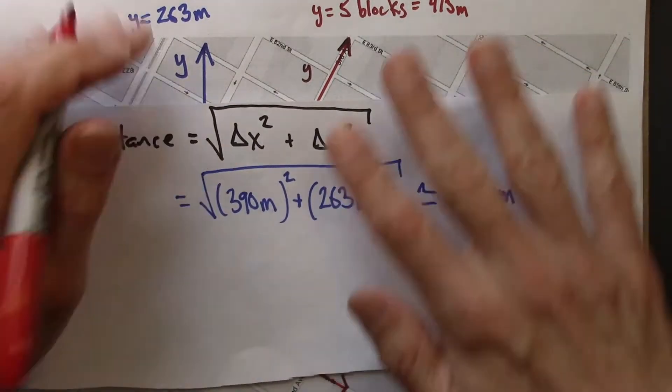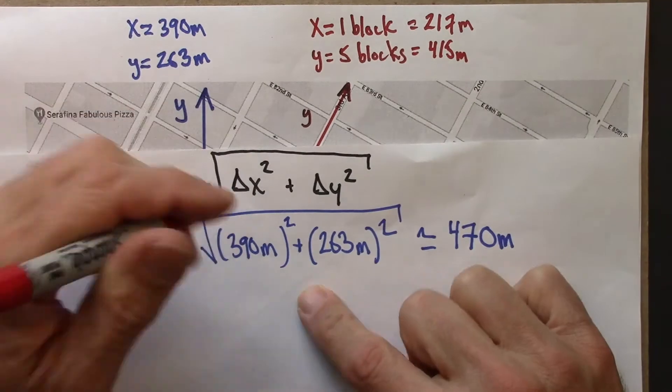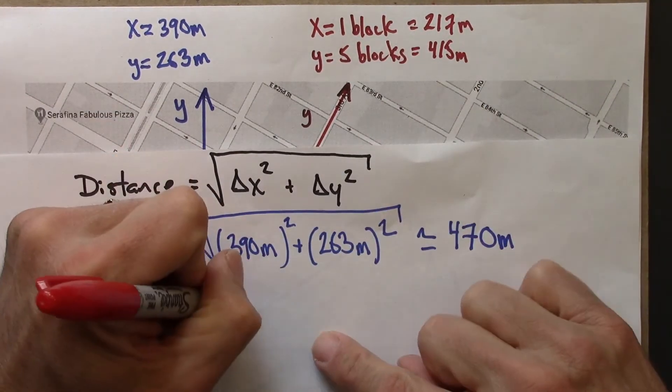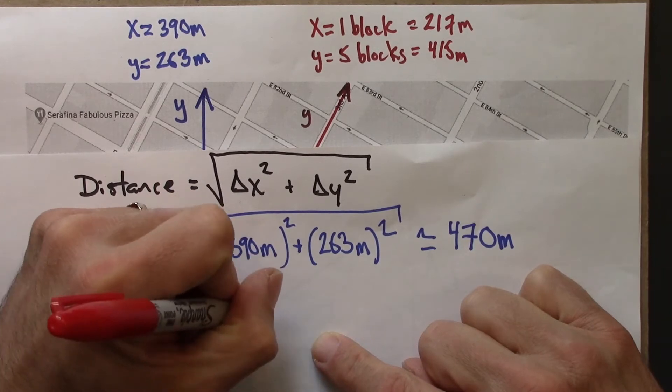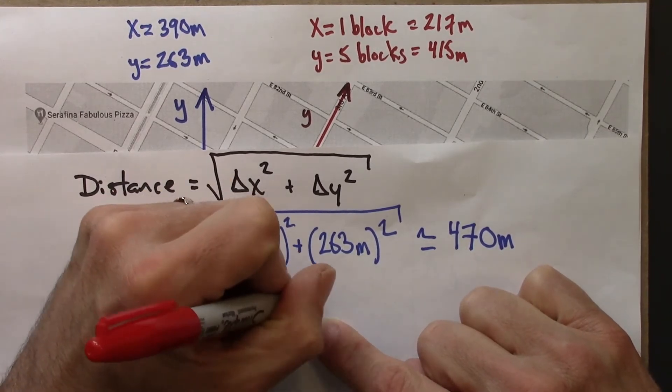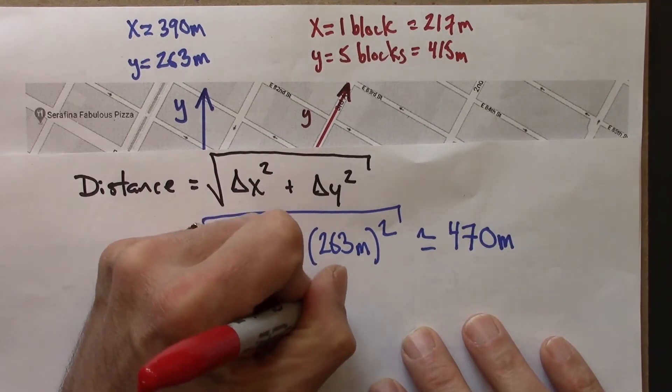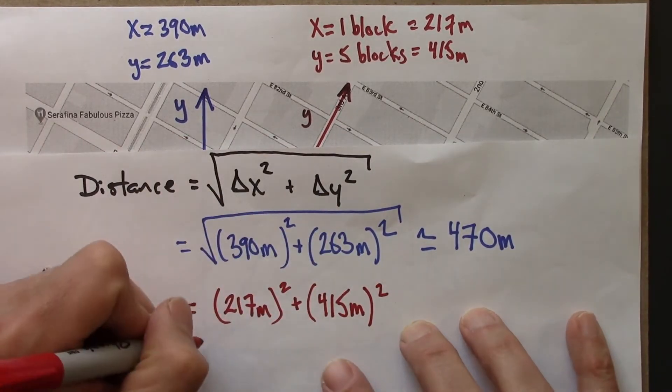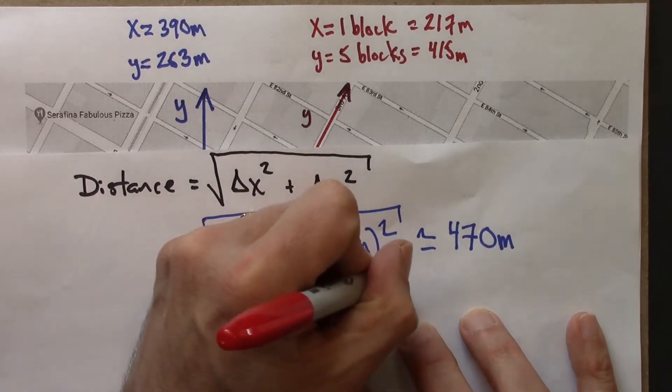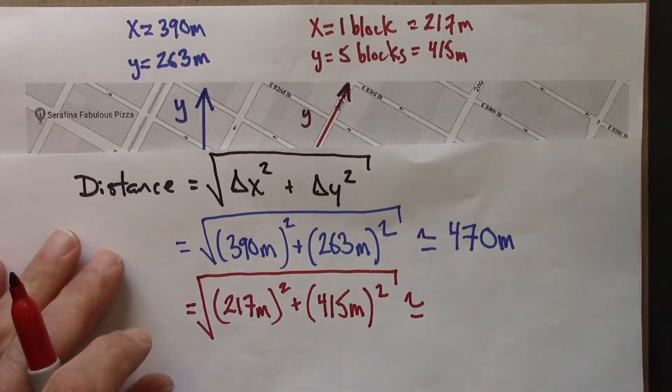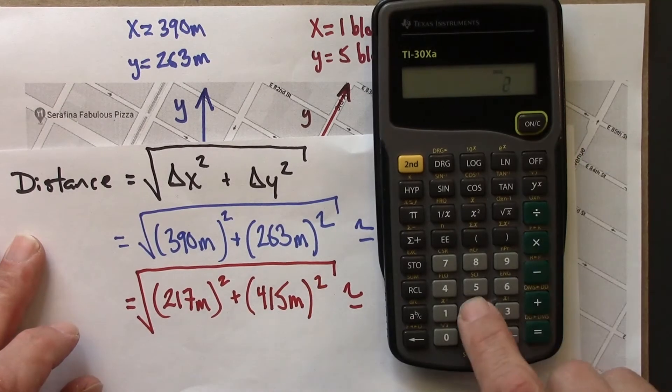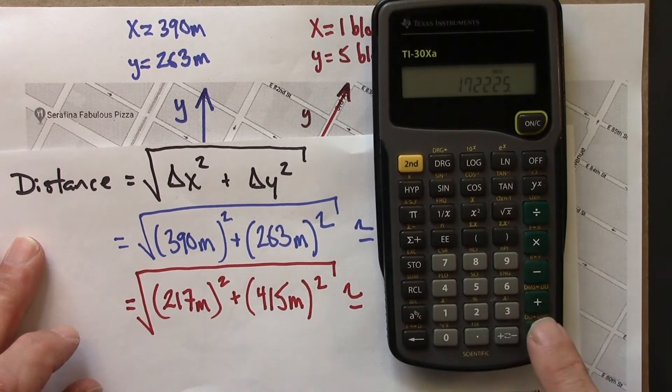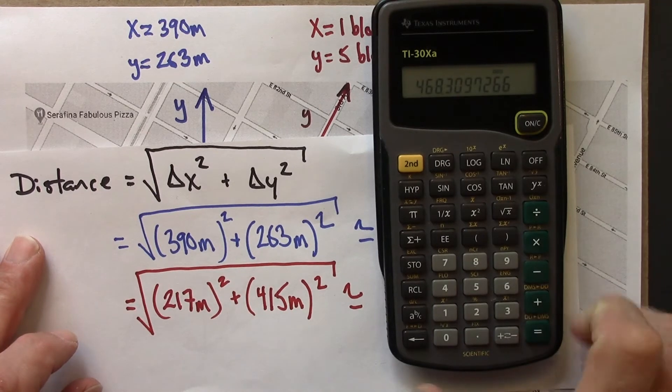I'll use the numbers from here. That's going to be 217 meters squared plus 415 meters squared. Square root that. Let's see what my calculator tells me now. 217 squared plus 415 squared equals square root 468.